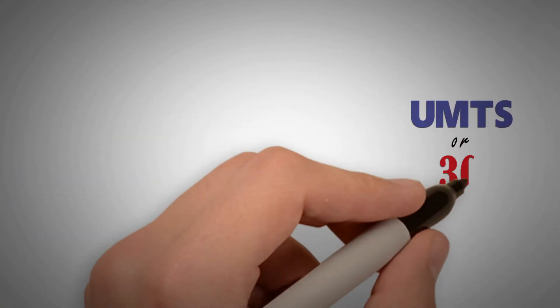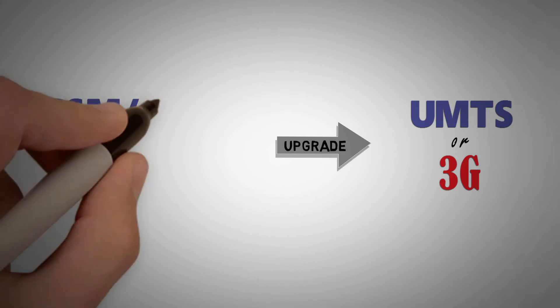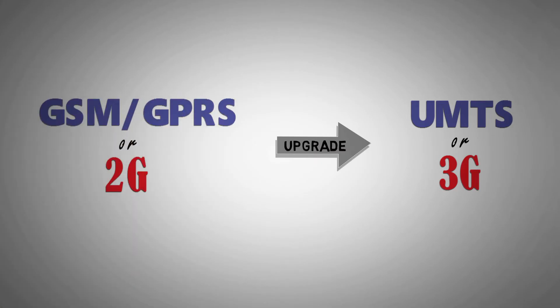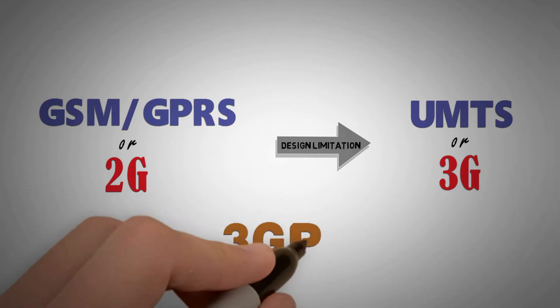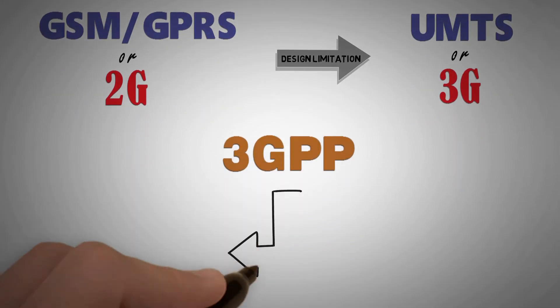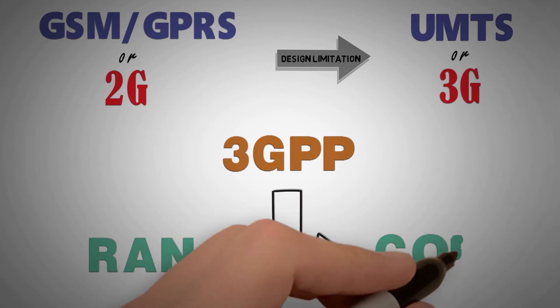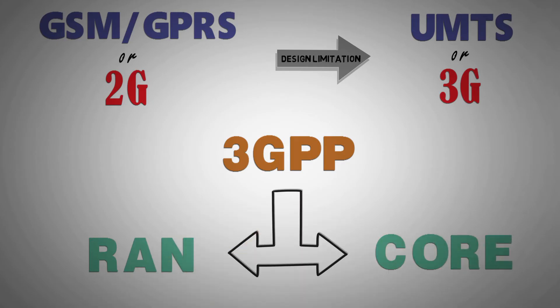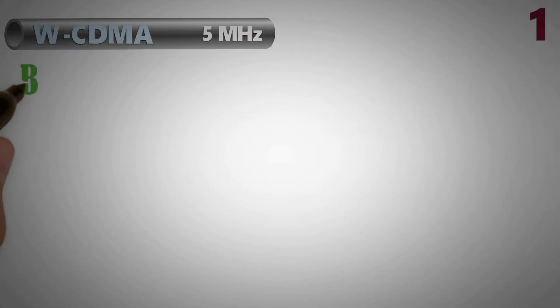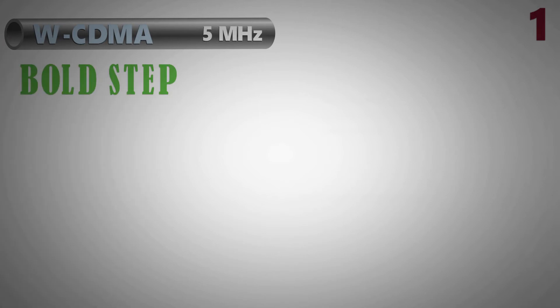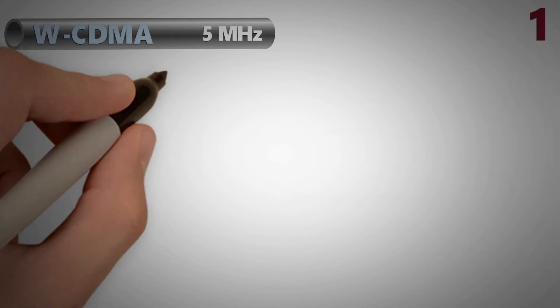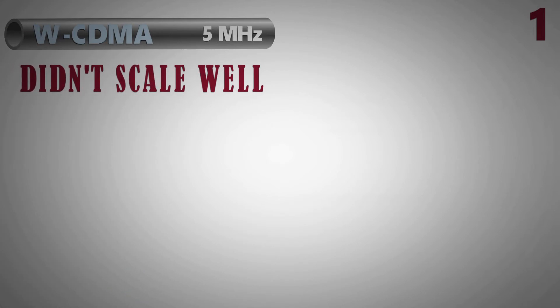UMTS or 3G was a huge upgrade to GSM-GPRS or 2G, but it was again facing some design limitations. That's why the governing body 3GPP decided to redesign the RAN and the core part. For example, specifying an interface with a carrier bandwidth of 5 MHz in WCDMA was a bold step — it performed well within limits, but in practice it didn't scale up very well.